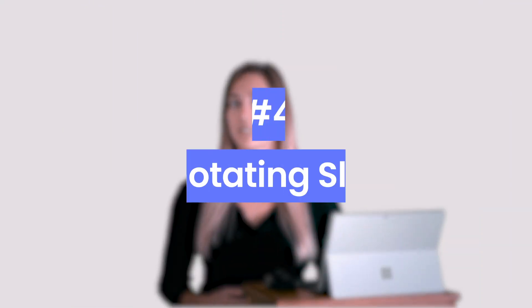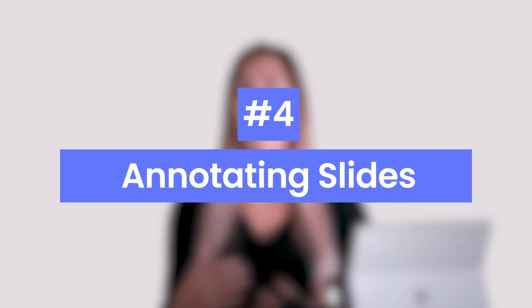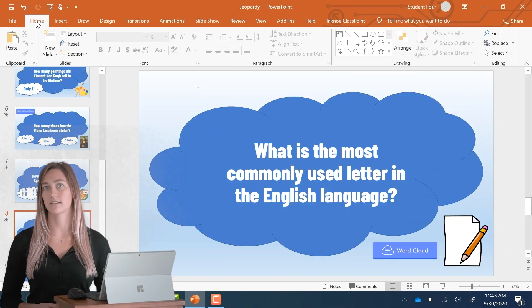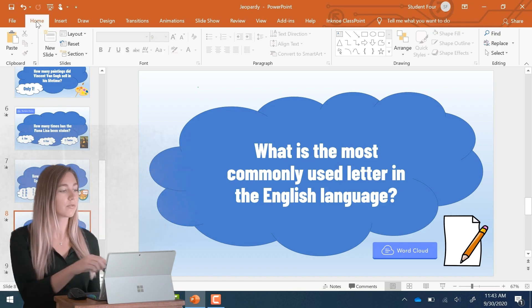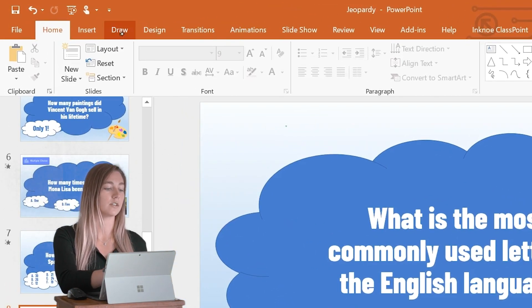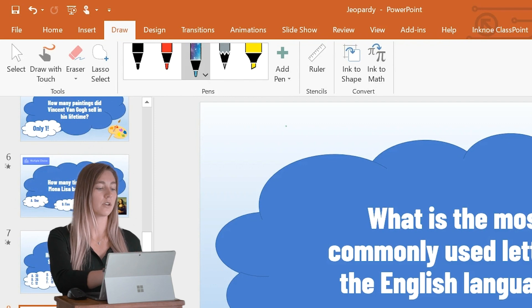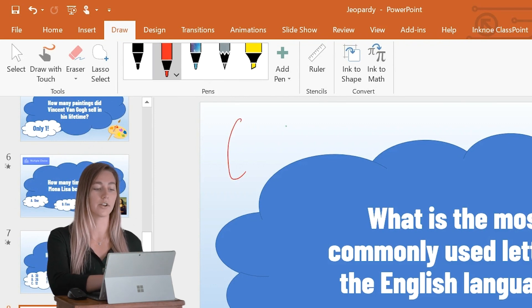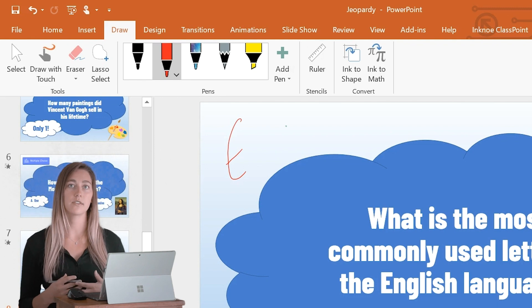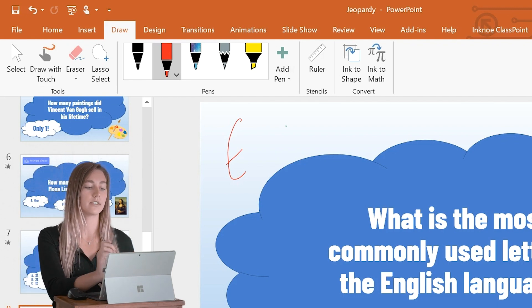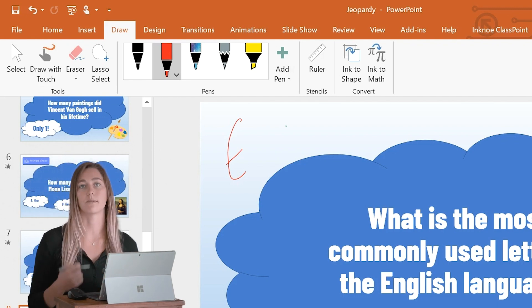Lastly, while you guys are presenting, why don't you try annotating on your slides? Within PowerPoint there are three different ways to do this. The first one is with the draw tab at the top ribbon. Here you can choose a pen and begin writing anywhere on your slide. The pros to this are that you have the ruler, the ink to shape, and the ink to map.